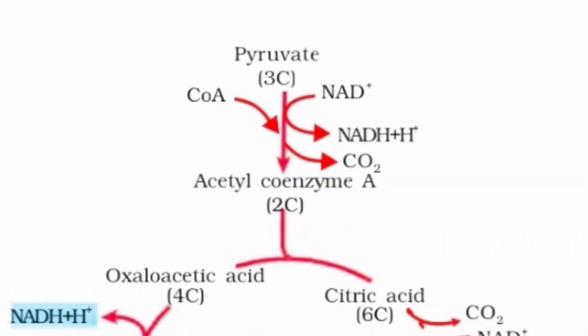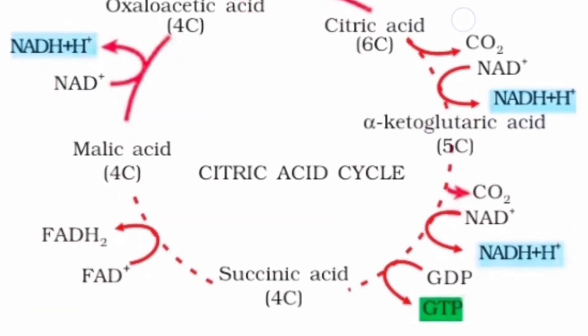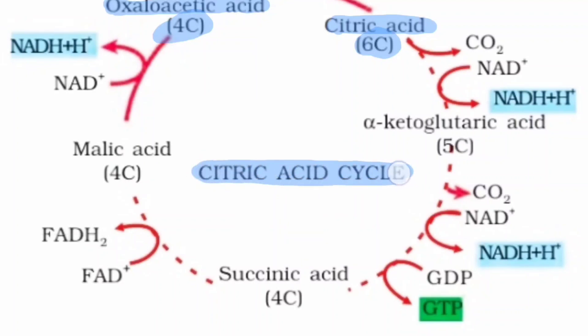Now dealing with the proper Krebs cycle. The first molecule already present in the Krebs cycle is oxaloacetic acid — a four-carbon molecule. Acetyl coenzyme A enters this reaction, so the combined carbons now form a six-carbon molecule called citric acid. That is the reason the Krebs cycle is also called the citric acid cycle or the tricarboxylic acid cycle.